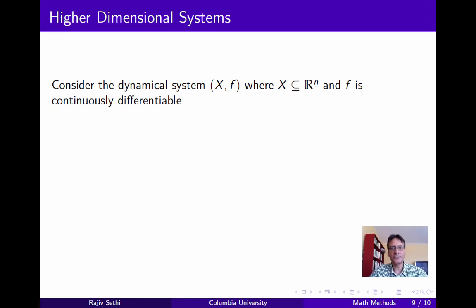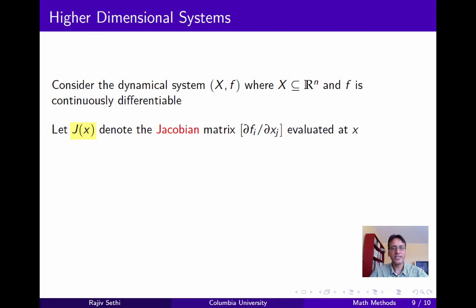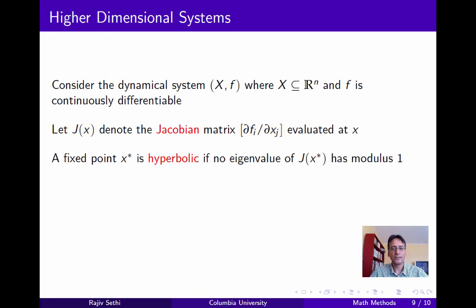Now let's consider higher dimensional systems in Euclidean space. Consider the system (x, f), where x is some subset of ℝⁿ and f is continuously differentiable. Let J(x) denote the Jacobian matrix — the matrix of partial derivatives evaluated at the point x. Now we say that a fixed point x-star of the system is hyperbolic if no eigenvalue of the Jacobian matrix evaluated at x-star has modulus exactly equal to 1. In other words, all eigenvalues either lie within the unit circle or outside the unit circle in the complex plane.